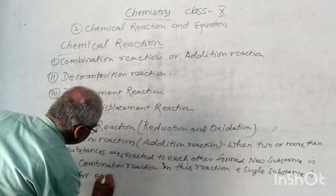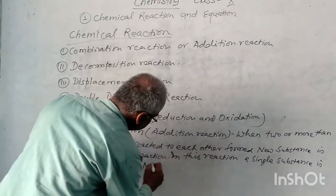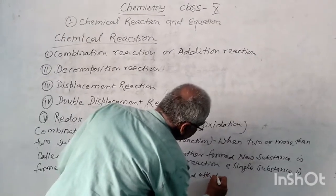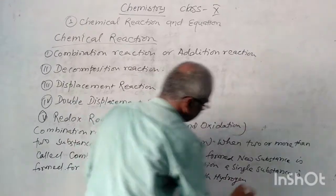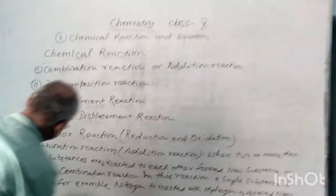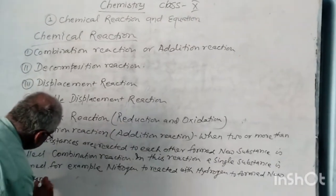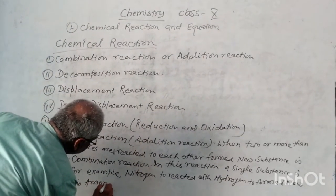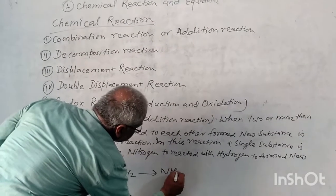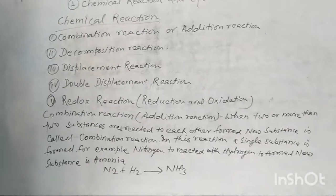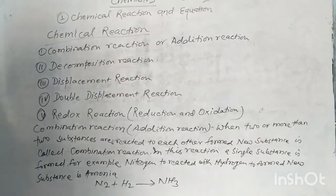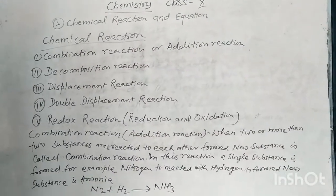For example, Nitrogen reacts with Hydrogen to form a new substance, which is Ammonia. N2 plus H2 gives NH3. Here, Nitrogen and Hydrogen are reactants, but the single substance Ammonia is the product. Please note this in your notebooks.